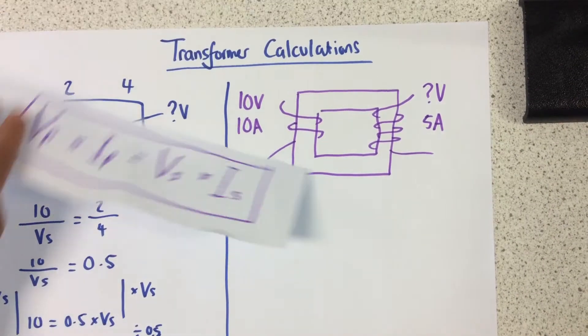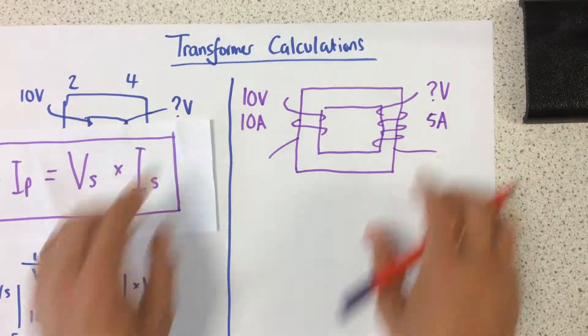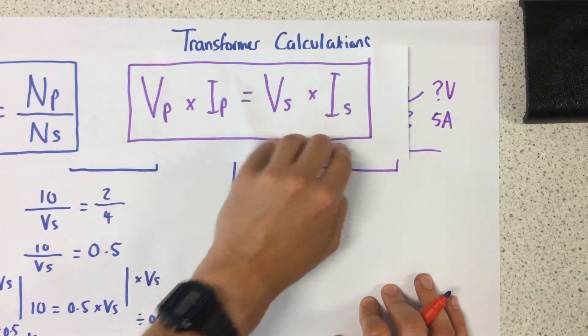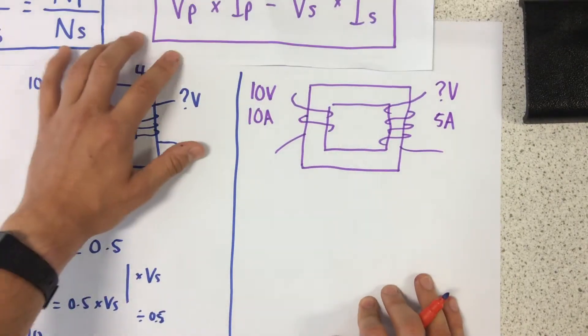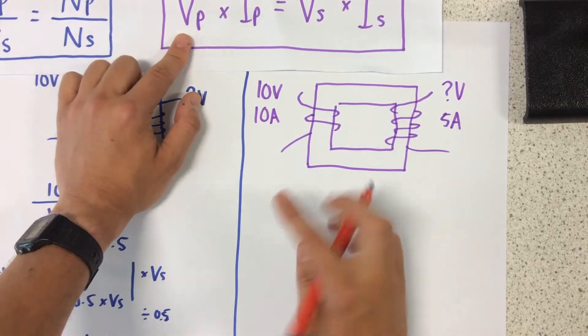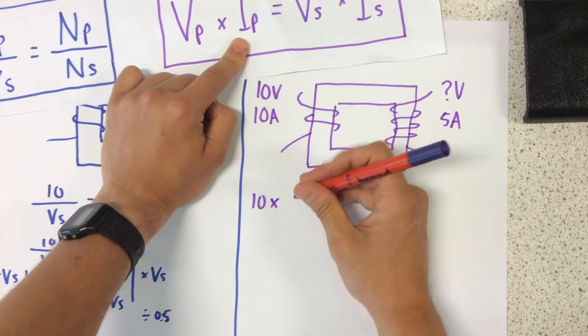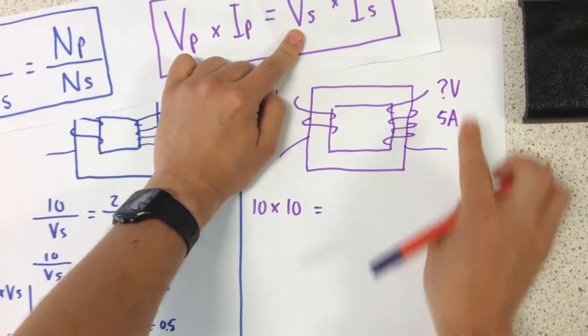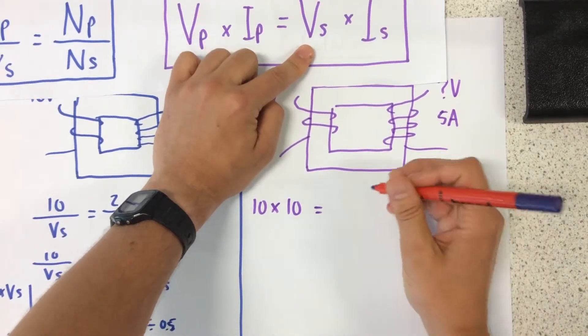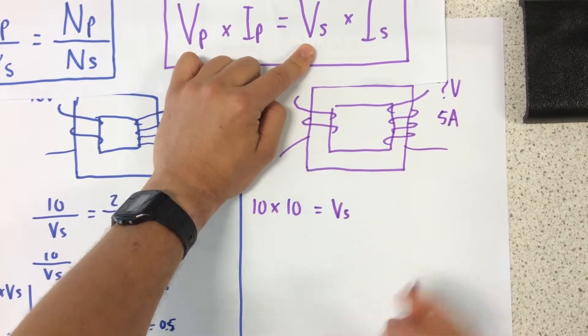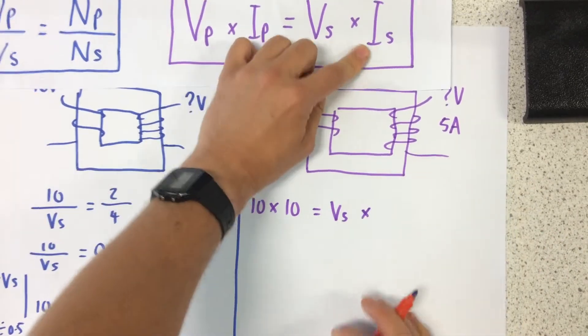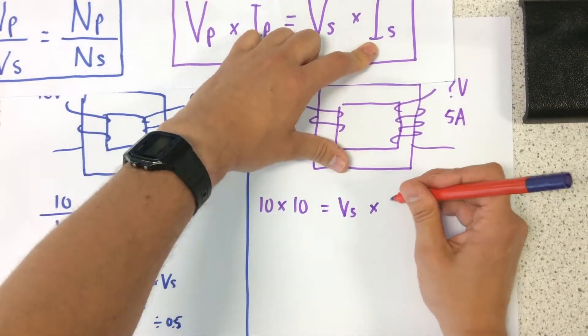So because this time I'm given amps and volts, I'm going to use this equation here. So my voltage at my primary, 10, times my current at my primary, 10, equals my voltage at my secondary. That's what I don't know, so I'm going to leave that as Vs, times my current at my secondary, 5.